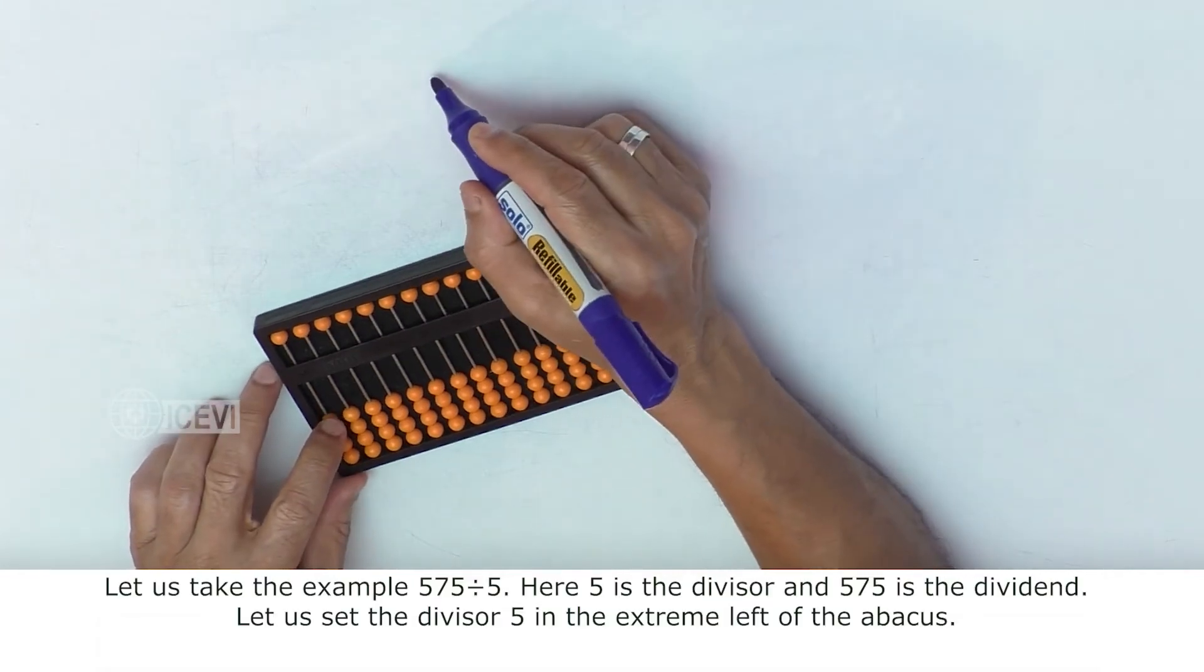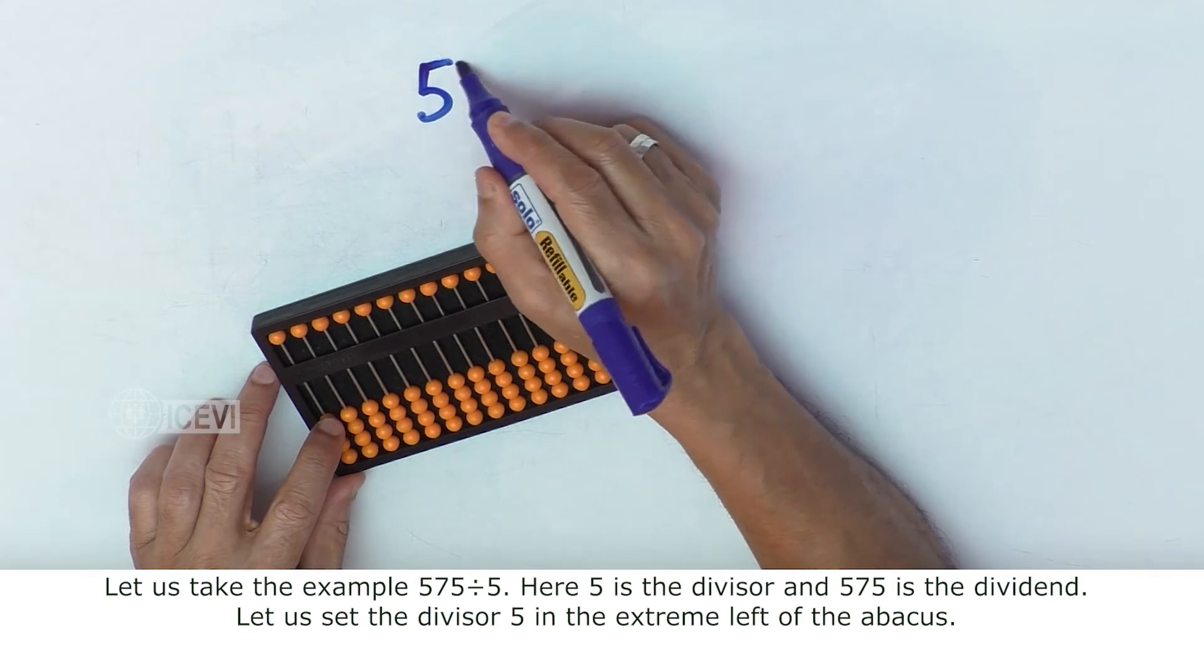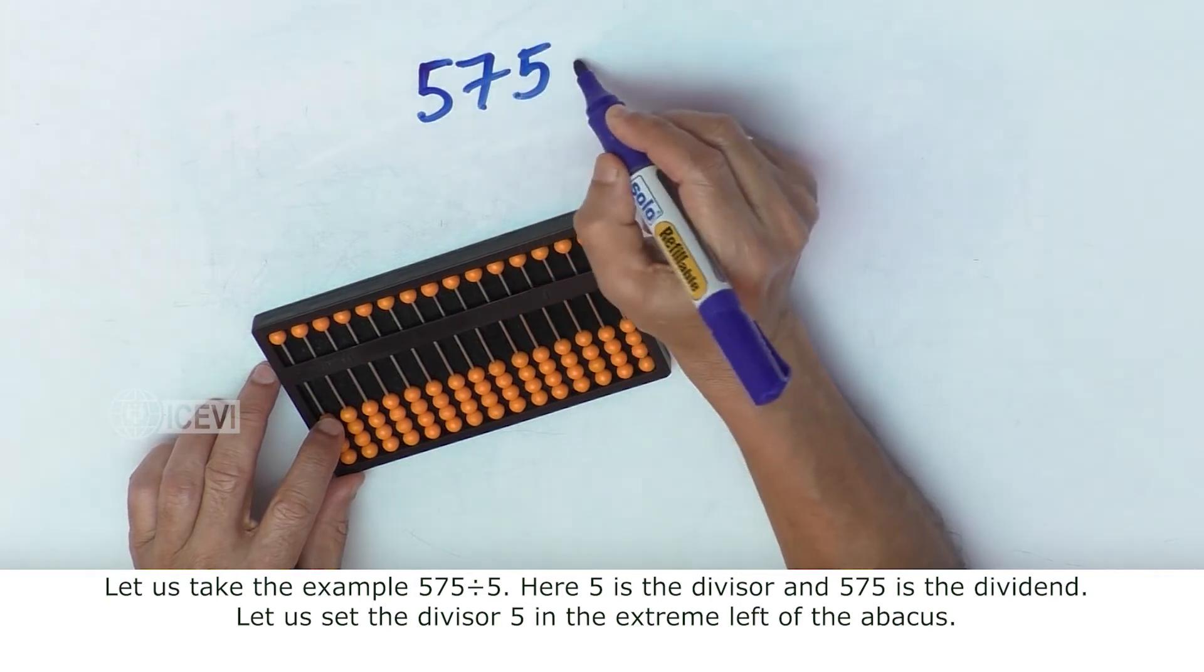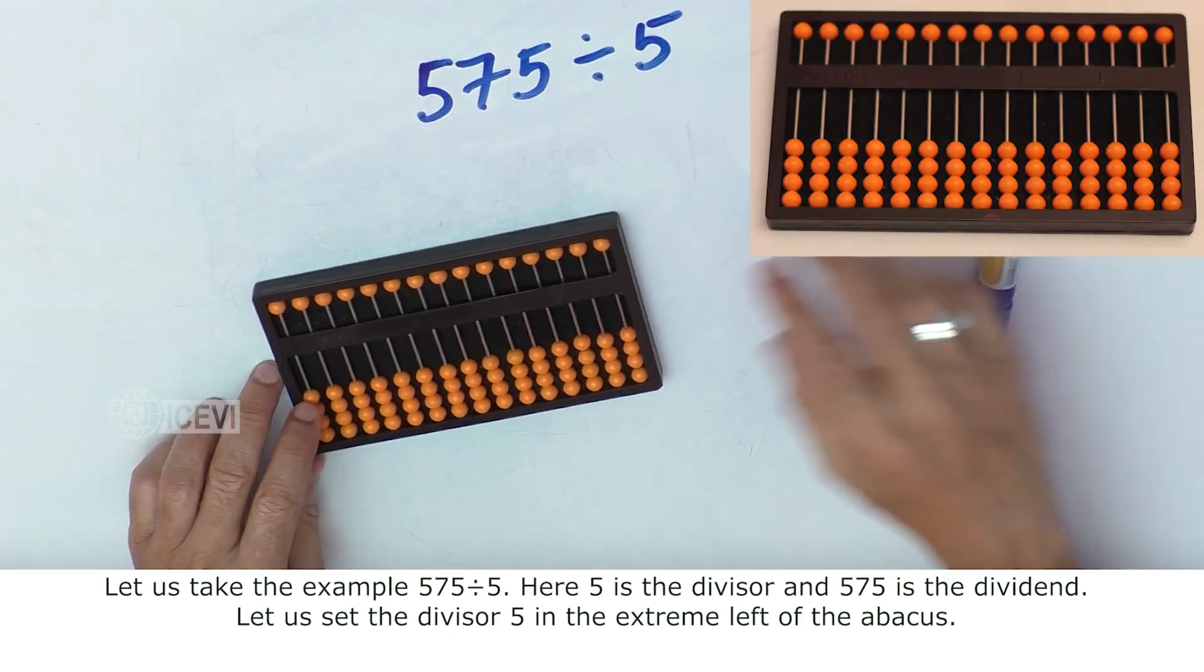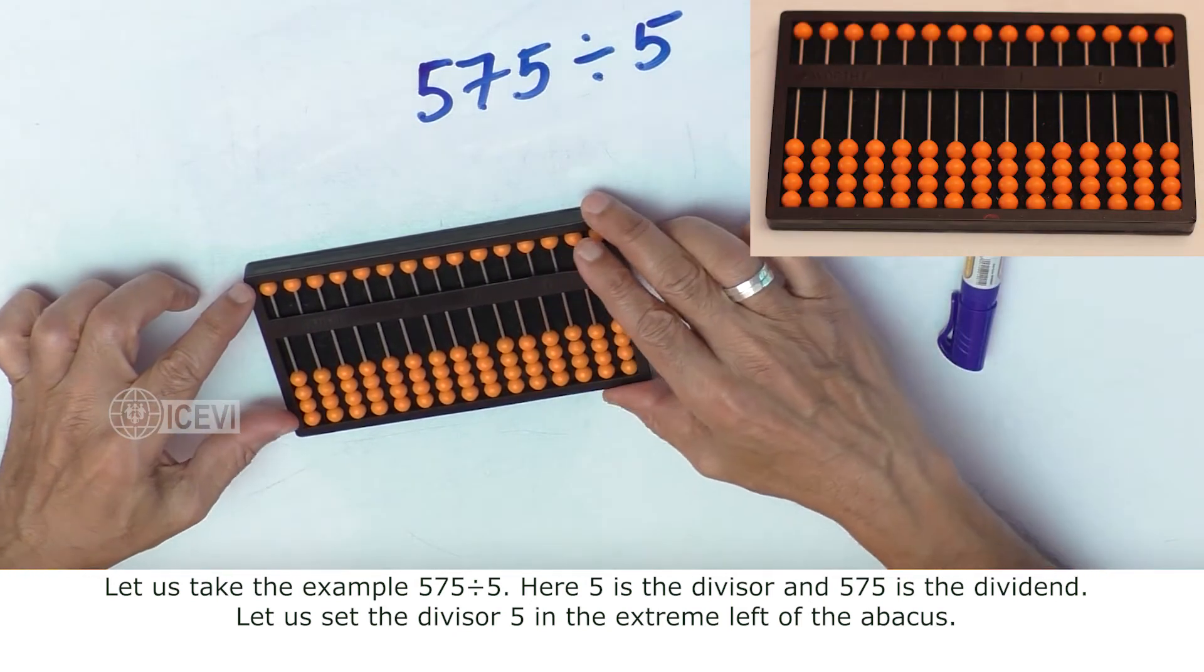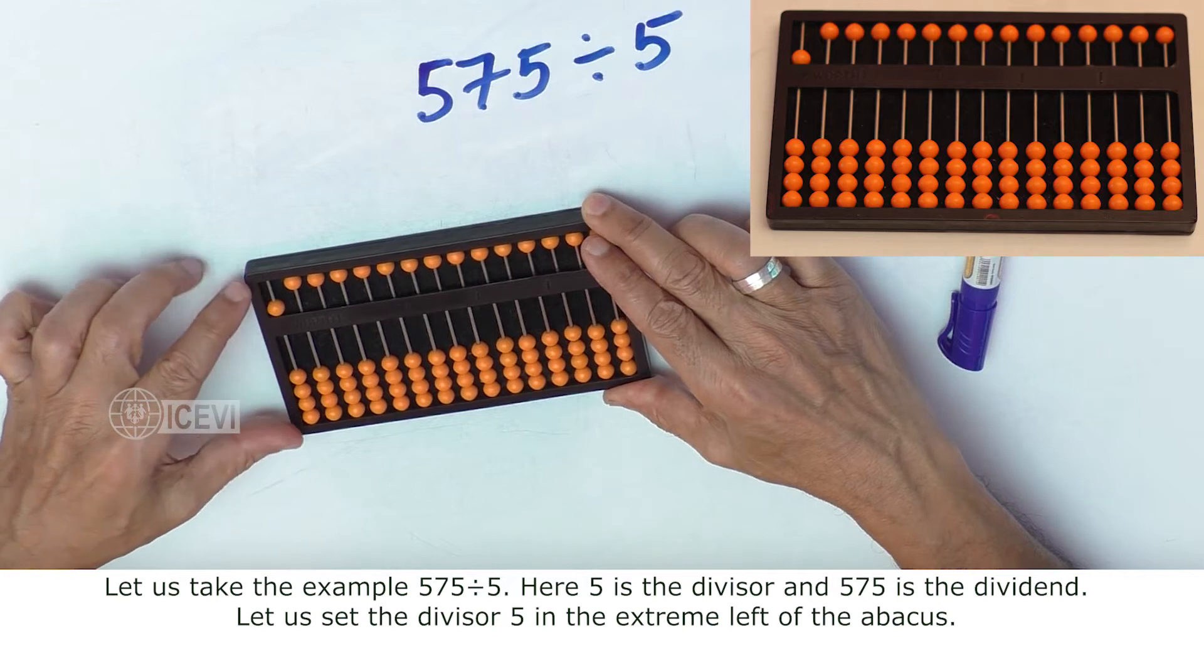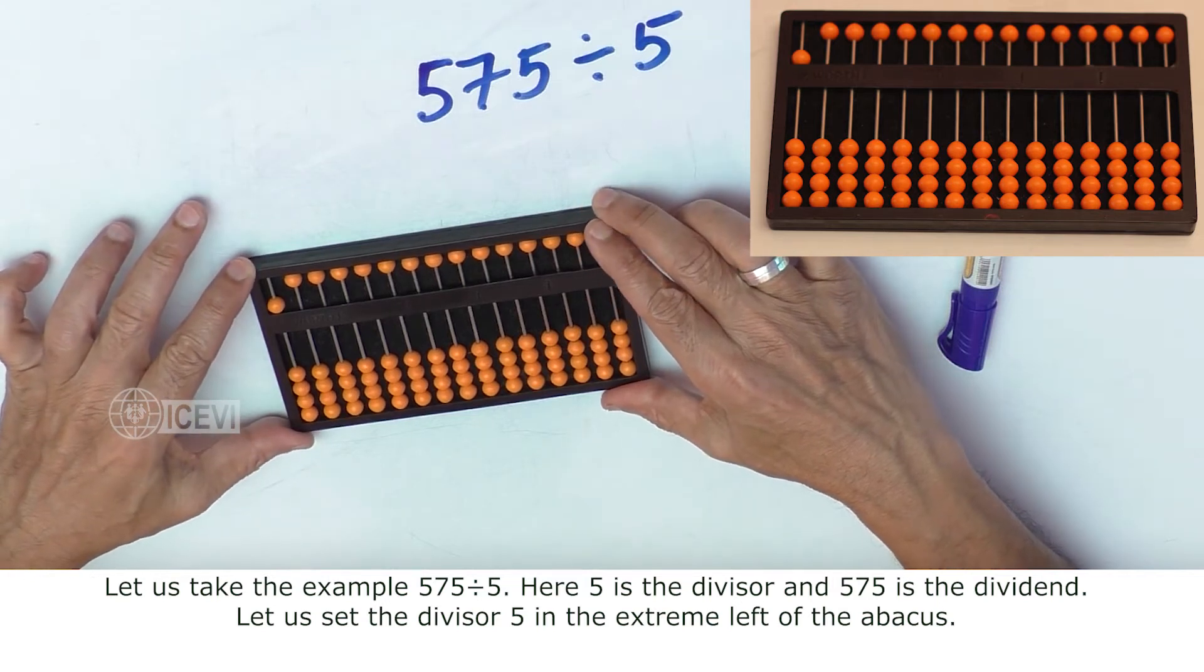Let us take the example, 575 divided by 5. Here, 5 is the divisor and 575 is the dividend.